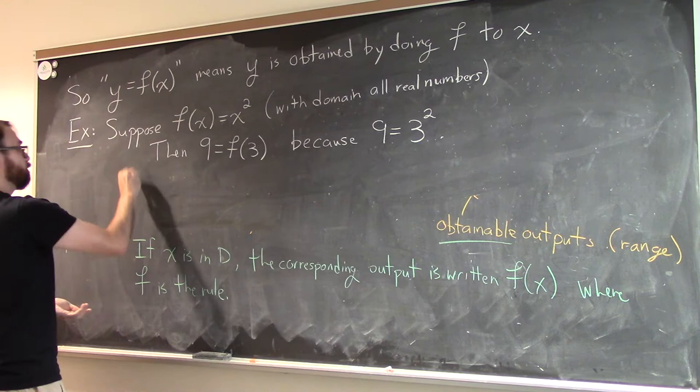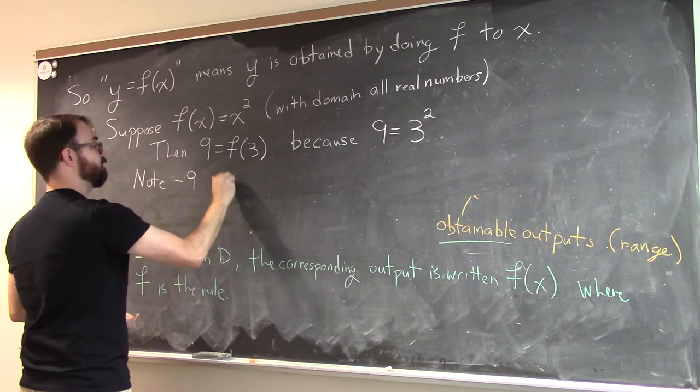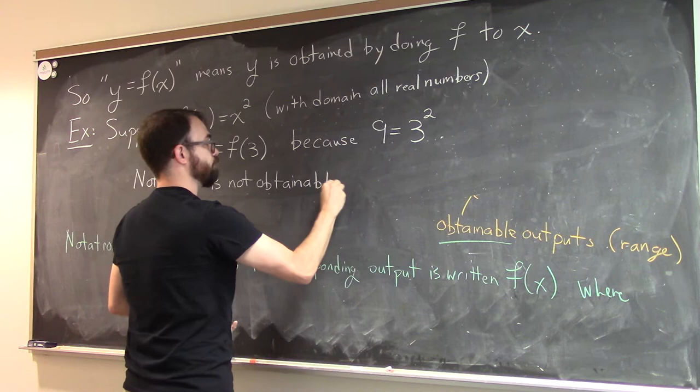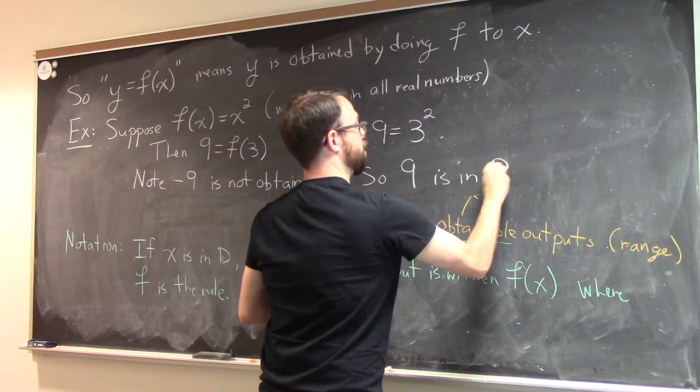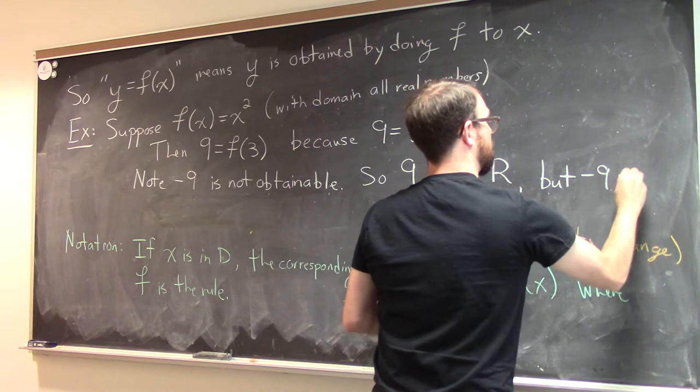So notice that negative 9 is not obtainable, right? You cannot square any number and get negative 9. So 9 is in R, it's in the range, but negative 9 is not.